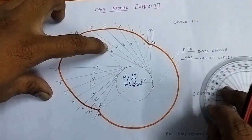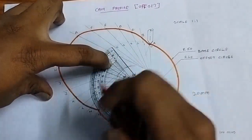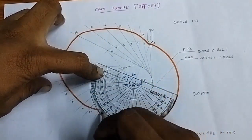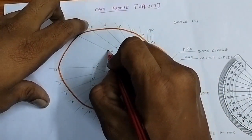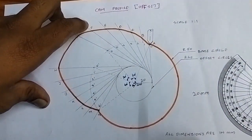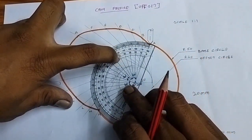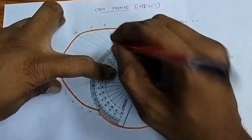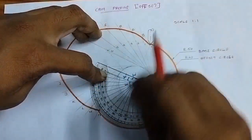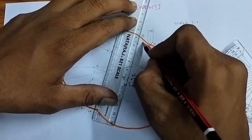Mark the forward stroke angle of 60 degrees on the cam. Divide the forward stroke into 6 equal parts and mark the pitched points. Project these points and configure the base circles at each position.